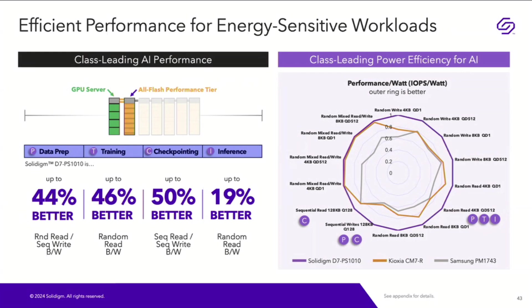In workloads like data prep, training, and checkpointing, we're seeing results that speak for themselves — a drive that outperforms competitors and does it with better efficiency. The spider chart on the right shows results across different queue depths, read-write mixes, and transfer sizes. The outer purple ring represents all results normalized to one for our PS1010. The inner wiggly lines are the relatively lower efficiency results from a couple of competitor TLC performance SSDs.